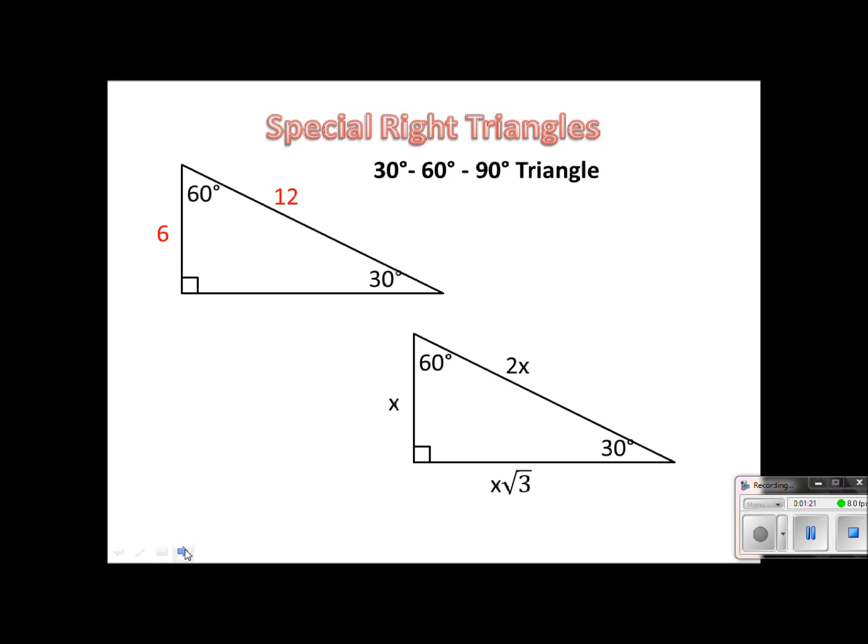And then the side opposite the 60 degrees would just be whatever the short side is and then times root 3. So the side opposite the 60 degrees would be 6 root 3.